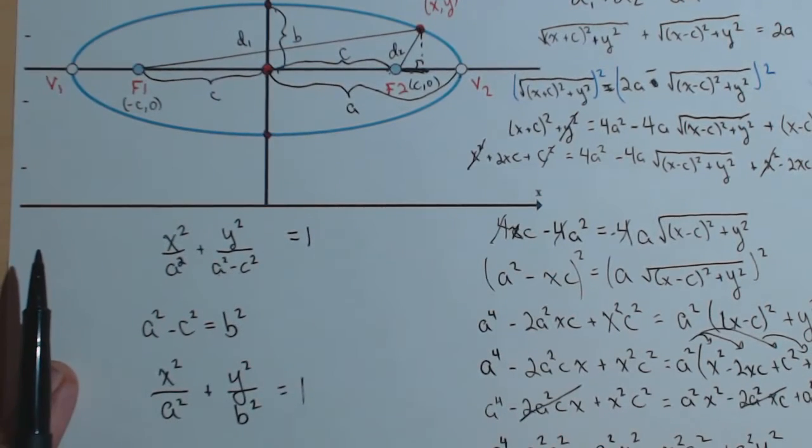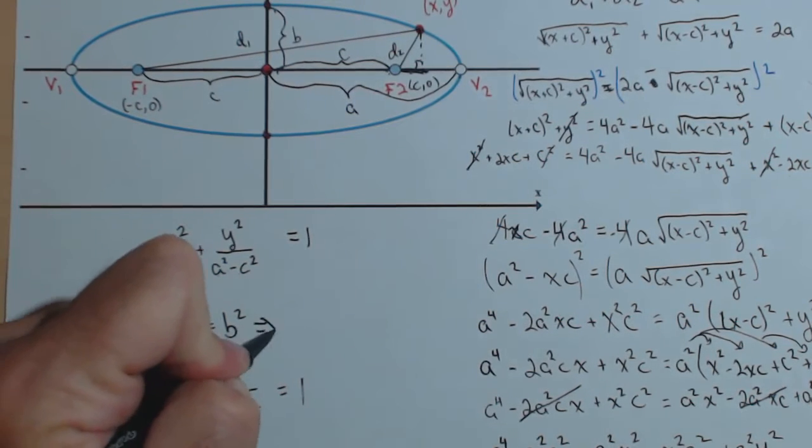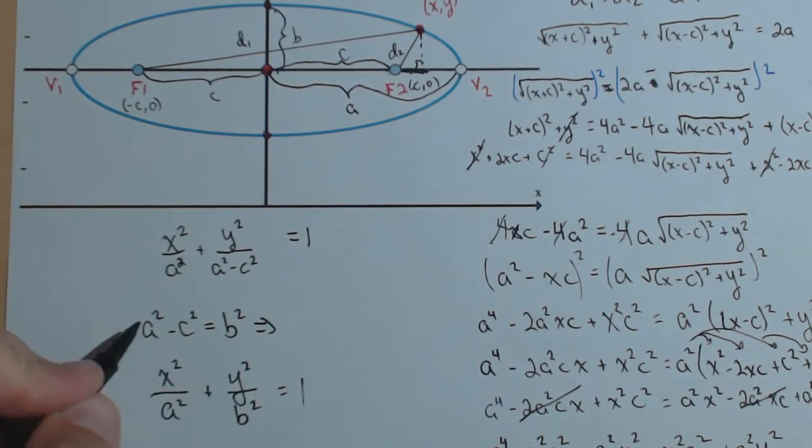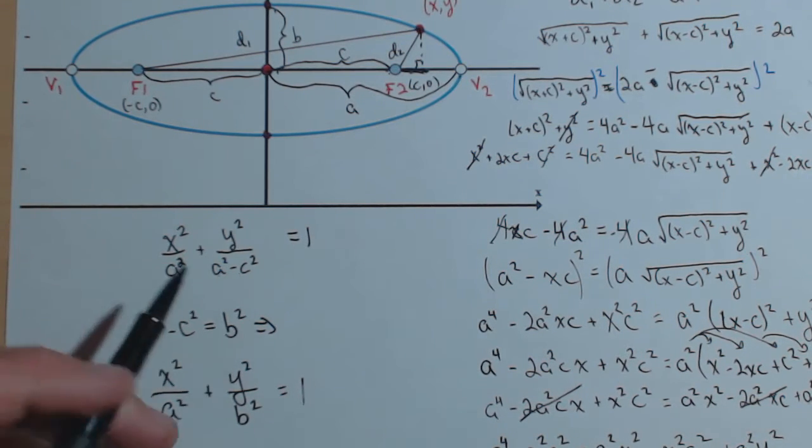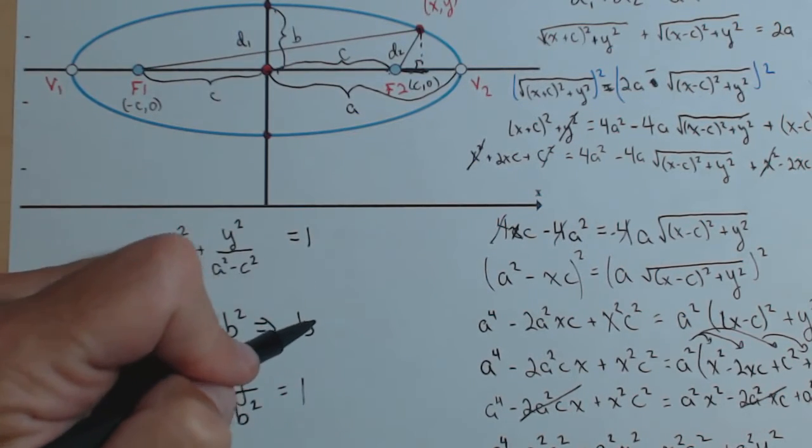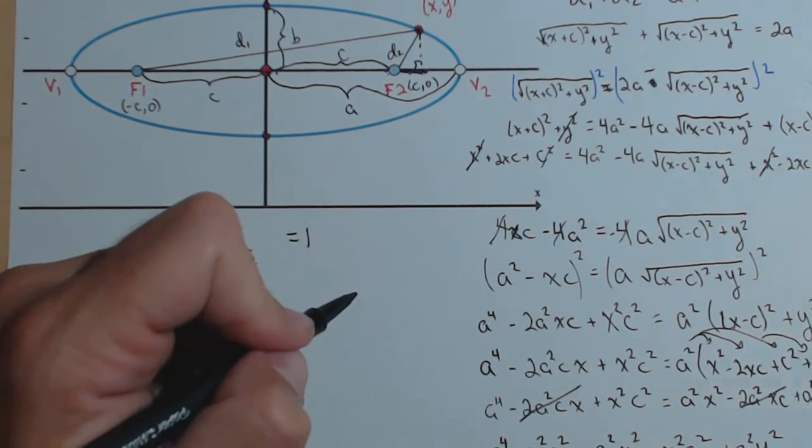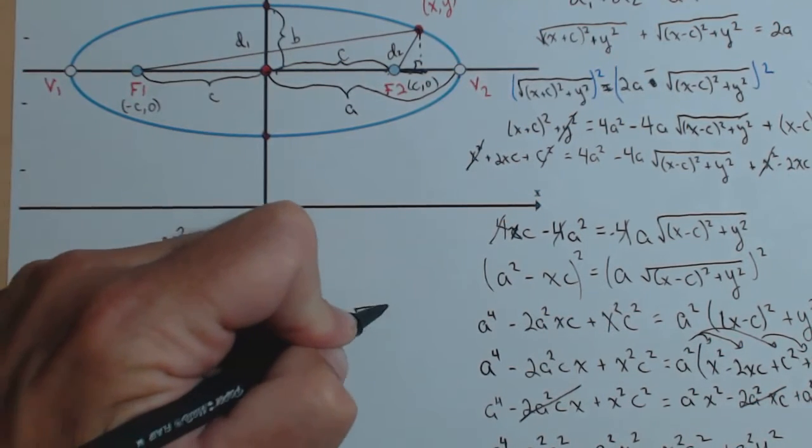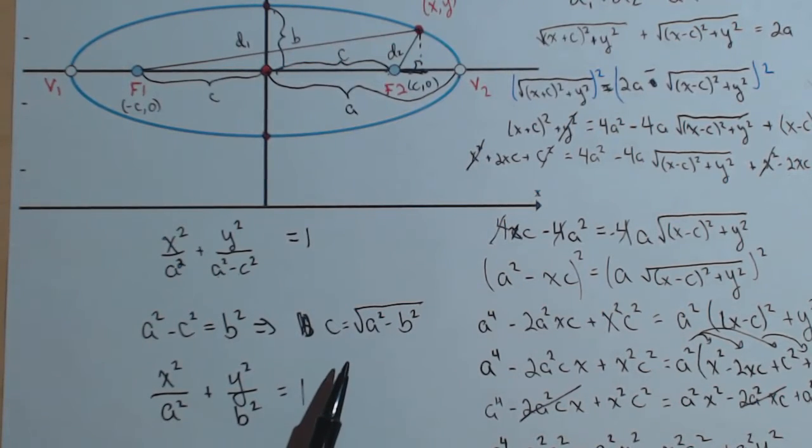What that means, then, is whenever we've got to find our focal length c, well, we can rearrange this and then add the c squared over, bring the b squared over. And what that tells us is that we know b is the square root of a squared minus c squared. Therefore, if we solve this thing for c, c equals the square root of a squared minus b squared. That's always going to give us our focal length.